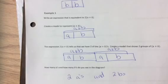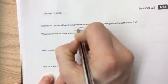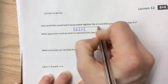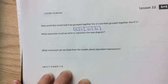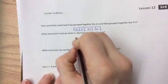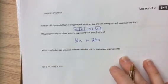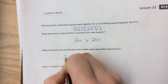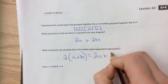You probably could have done that without any assistance. If you take a look at the next question, how would the model look if we grouped together the A's, then grouped together the B's? So if I took my 2 A's and put them in the front instead, and then I grouped my 2 B's together, this is how it would look. What expression could you create to represent the new diagram? Well, we have 2A plus 2B. What conclusion can we draw from the models about equivalent expressions? We just discovered 2 groups of A plus B is equivalent to 2A plus 2B.